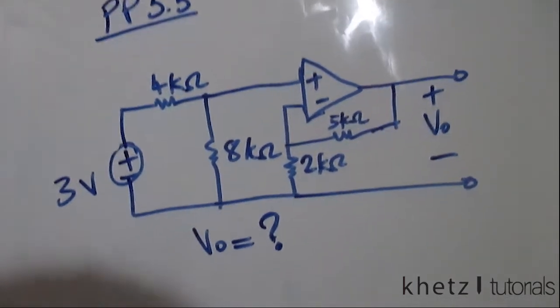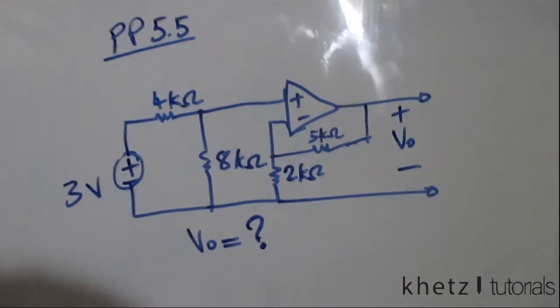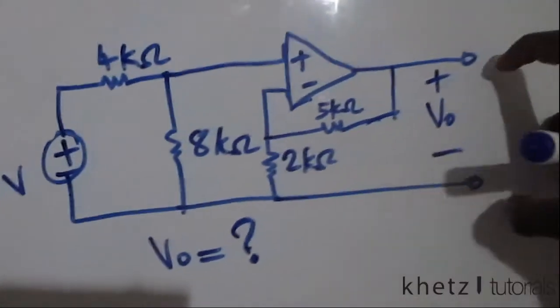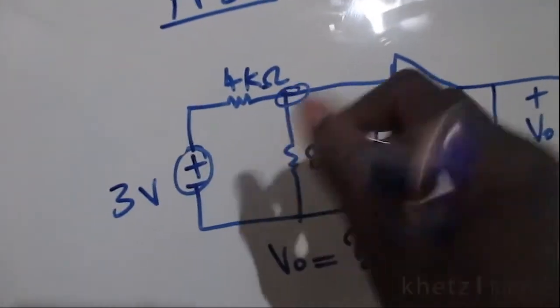Welcome to GATS Tutorials and in this video I will be covering practice problem 5.5. We are asked to find VO which is over here, which is the output.